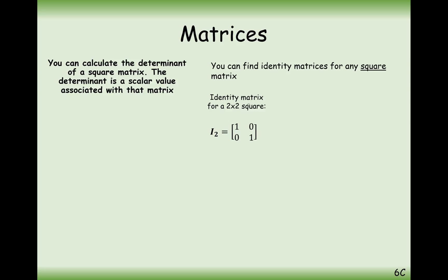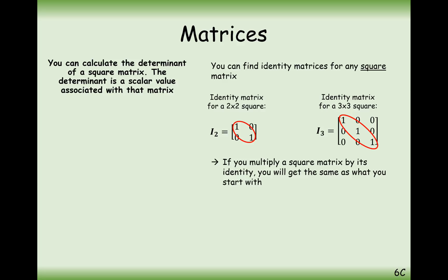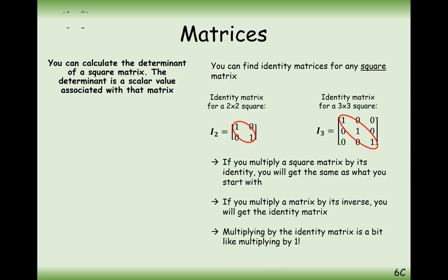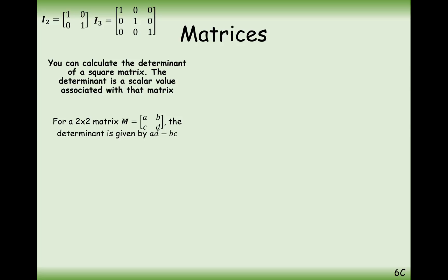We're working ultimately towards how we find the identity matrix. The identity matrix is basically like the number 1, but in matrix form. It's 1s down the leading diagonal and 0s in all other positions. So for the I3 matrix, it's 1 down the leading diagonal and 0s in the other positions. If you multiply a matrix by I — the I2 or the I3 — you end up with the same matrix you started with. It's effectively like multiplying a matrix by 1. How do we multiply a matrix by another matrix to get the identity? Working out the determinant is on the route to doing that.